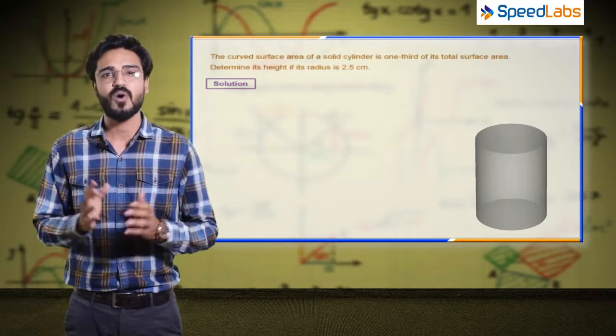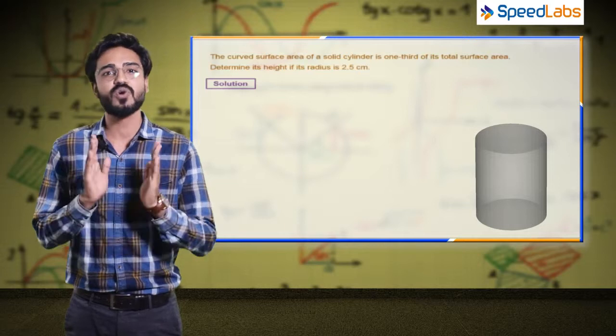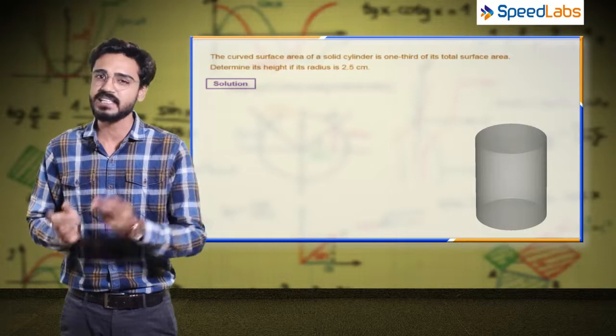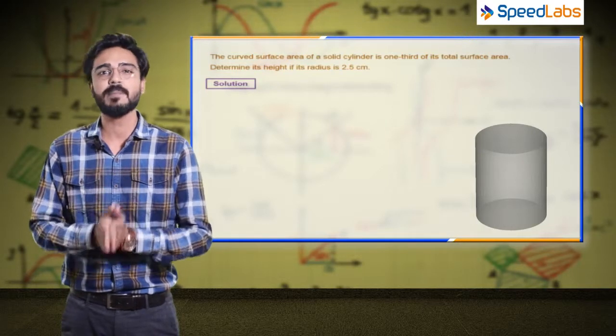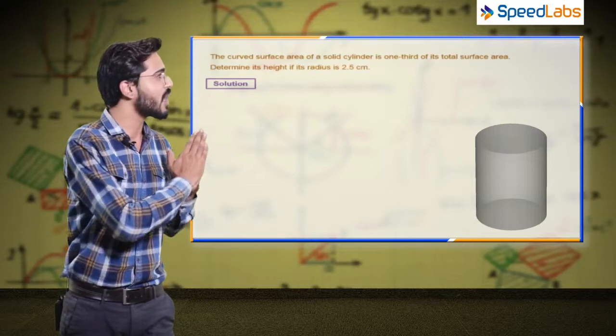Of this cylinder. So you have two pieces of information given: the curved surface area is one-third of the total surface area, and the radius is 2.5 centimeters. So recall your formula for curved surface area of a cylinder.